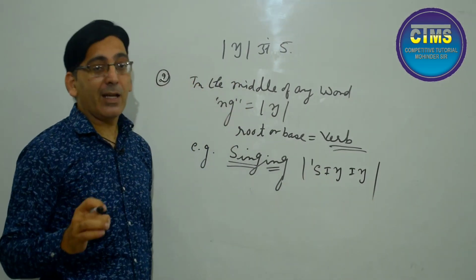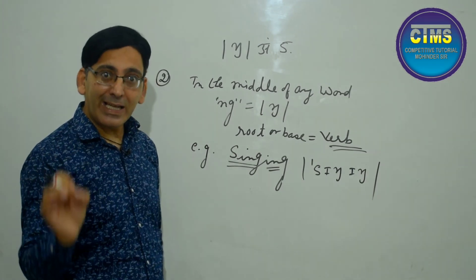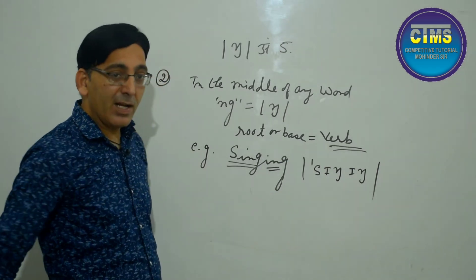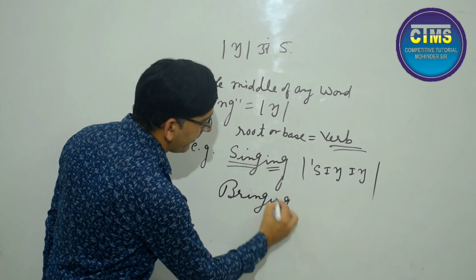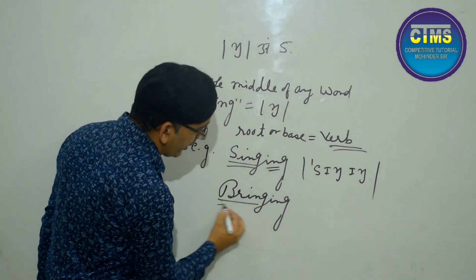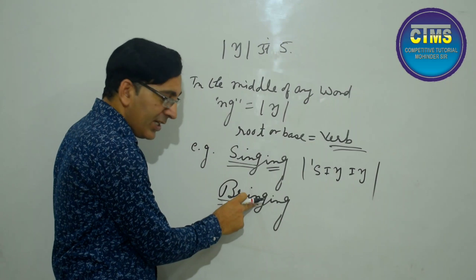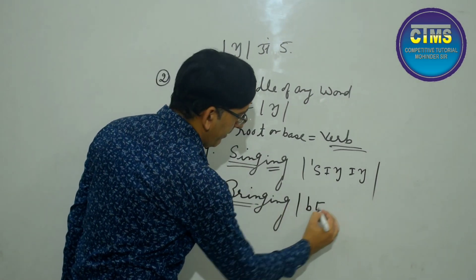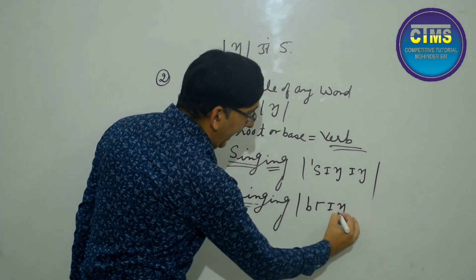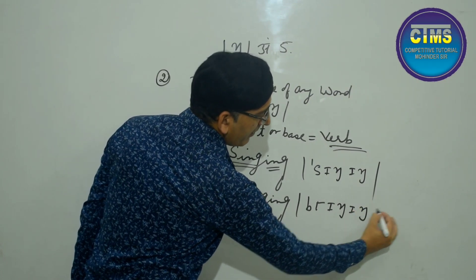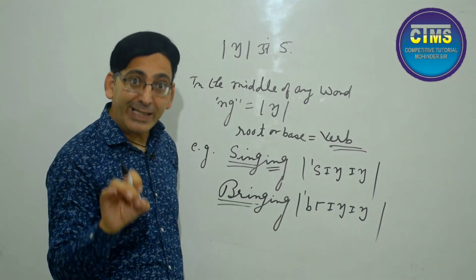So what does it become? 'Singing' — S-I-N-G becomes 'sing', and adding I-N-G gives 'singing'. Another example: B-R-I-N-G + I-N-G — this gives 'bringing', with ŋ in the middle as well.